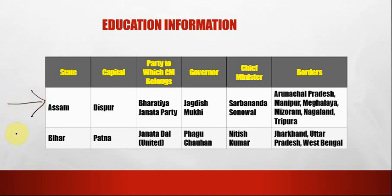The next state is Bihar. The capital of Bihar is Patna. The party to which the CM belongs is Janata Dal (United). The governor is Fagu Chauhan. The chief minister is Nitish Kumar. The borders are Jharkhand, Uttar Pradesh and West Bengal.